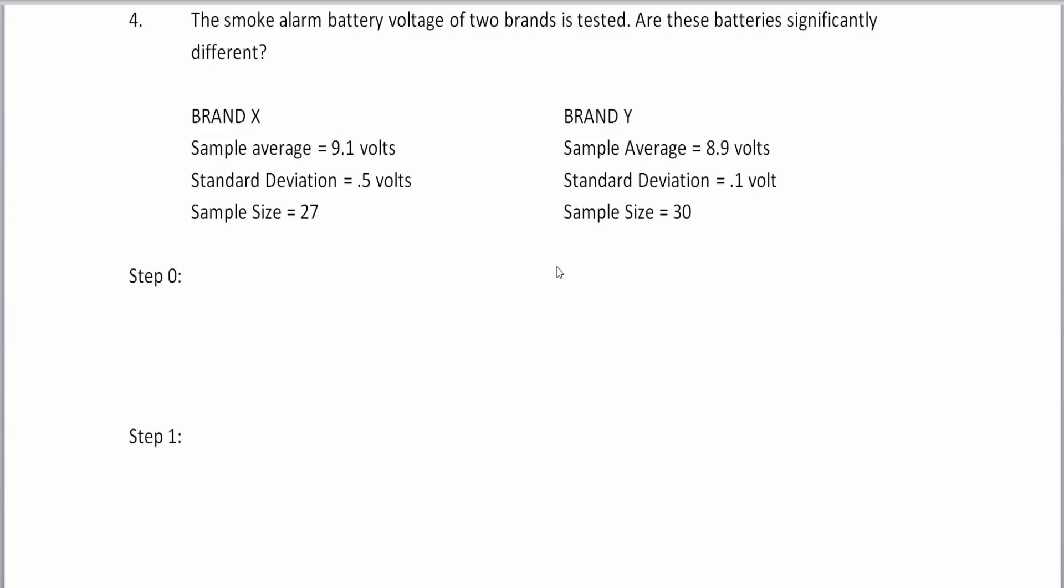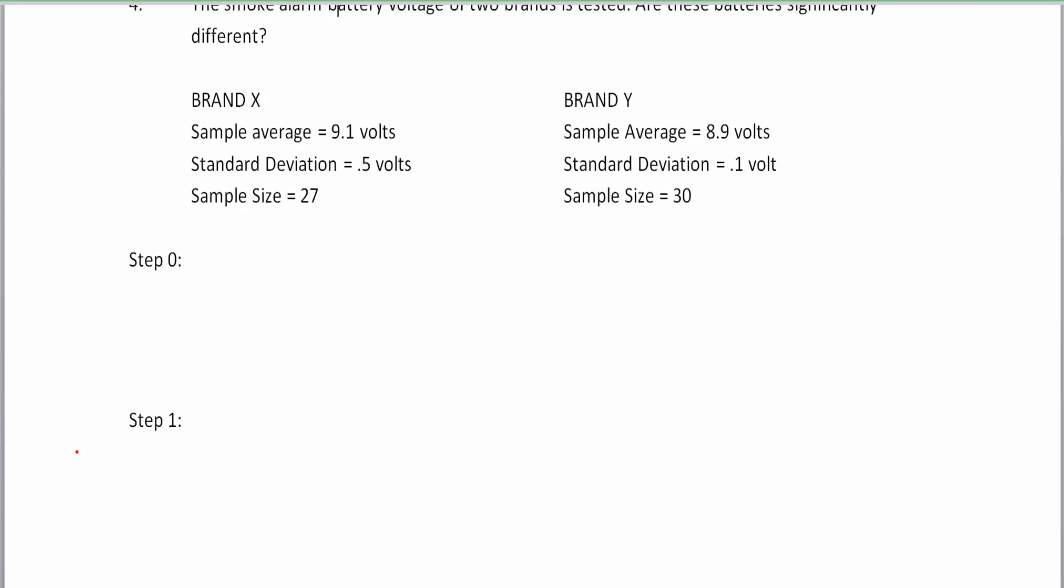So let's take a look at this. We're going to take a look at smoke alarm batteries. They tested these two different brands, and one brand had an average of 9.1 volts in their 9-volt battery, give or take a volt, and the other one was 8.9 volts, give or take just 0.1 volt. Let's look at the two sample sizes. Step zero isn't really necessary because they kind of put everything in a really nice table format for us. So we can just move on to step one, which is our null and alternative hypothesis. It says, are these batteries significantly different? So that's going to tell us our alternative for brand X and Y is going to be a not equal to problem. So this is the average of brand X is not equal to the average of brand Y. The null hypothesis is the brand X that's going to be equal to brand Y. So it doesn't matter which smoke alarm batteries you choose.